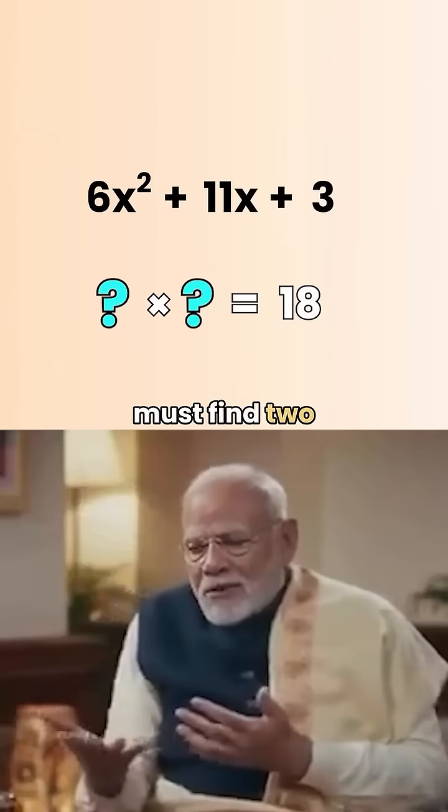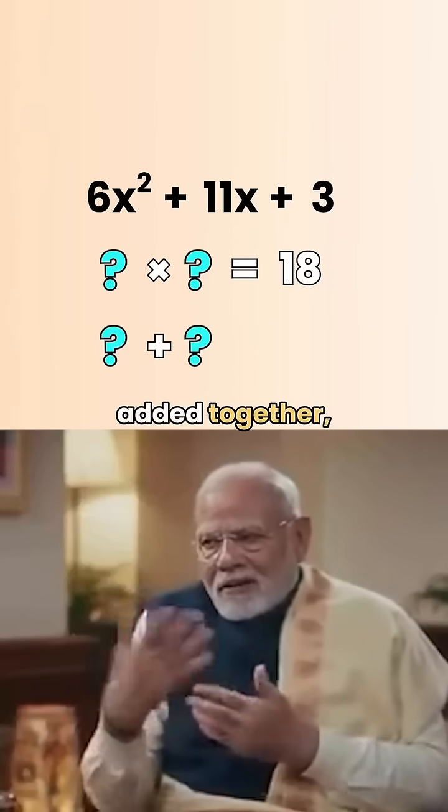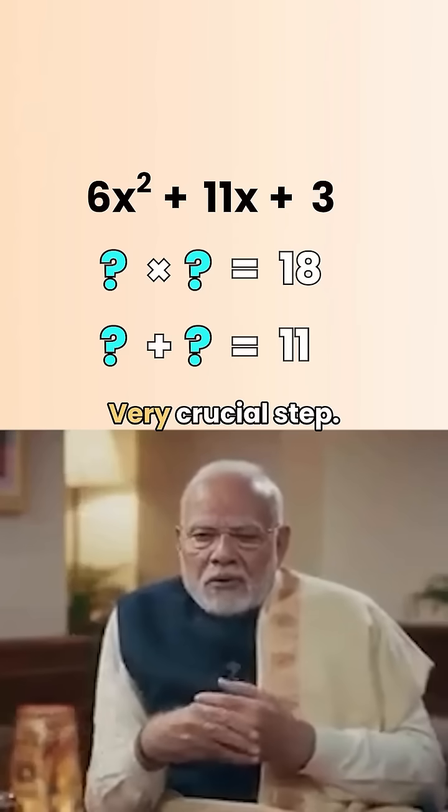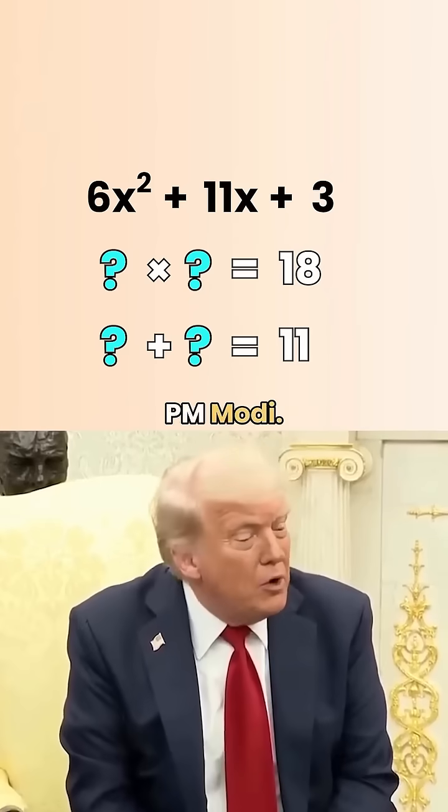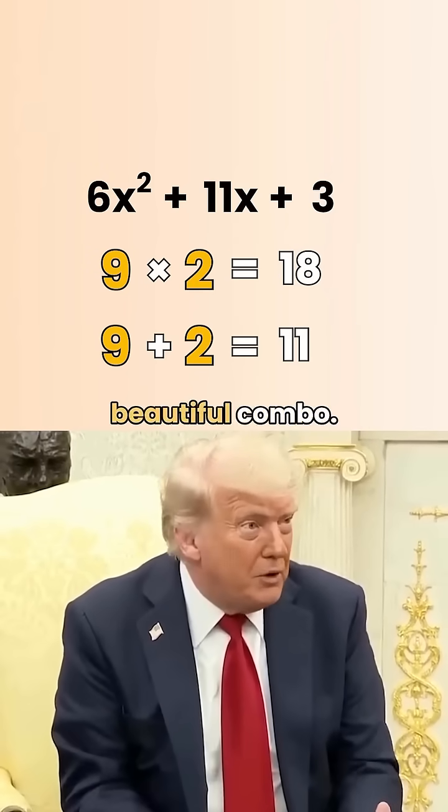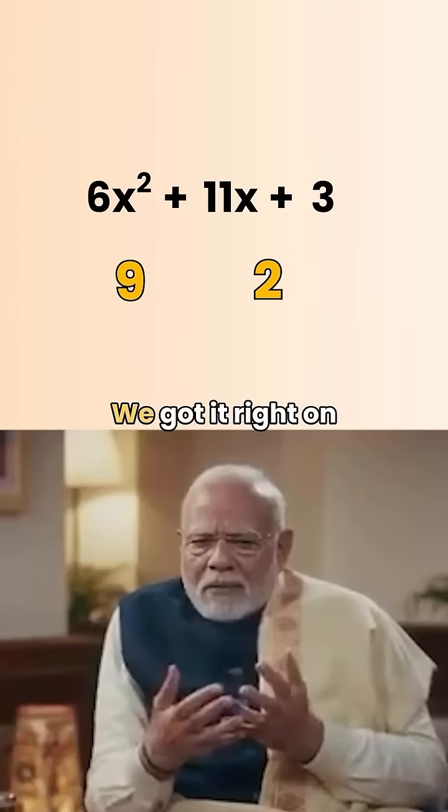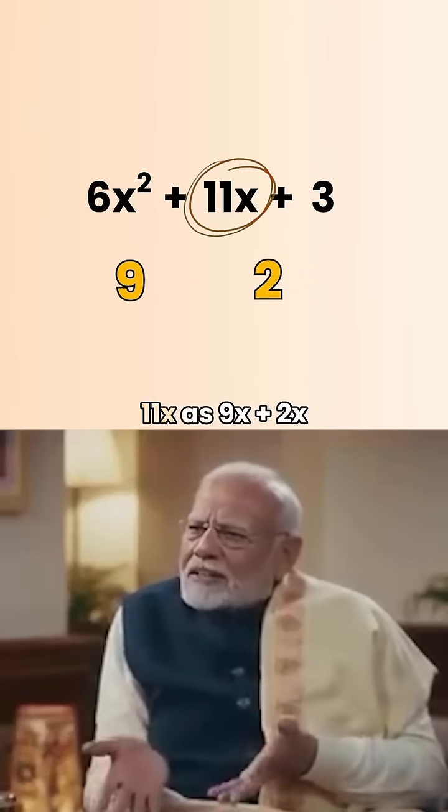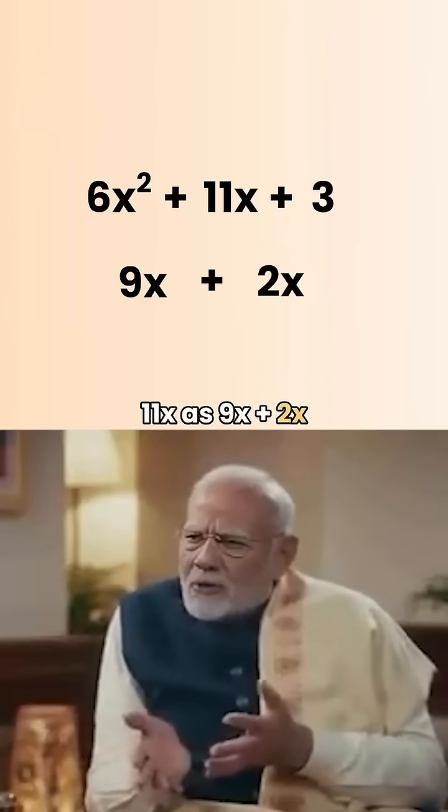Now we must find two numbers that multiply to 18. But when added together, they give us 11. Very crucial step. Easy. PM Modi, 9 times 2 is 18. 9 plus 2 is 11. That's a beautiful combo. Exactly. We got it right on the first attempt. Now we rewrite 11x as 9x plus 2x.